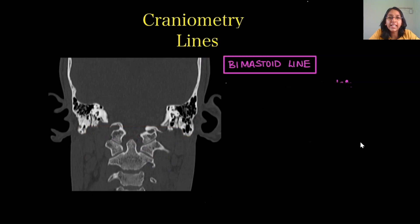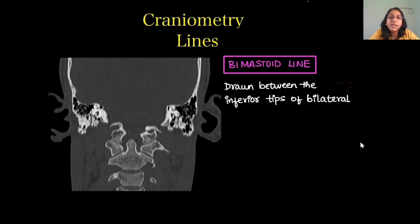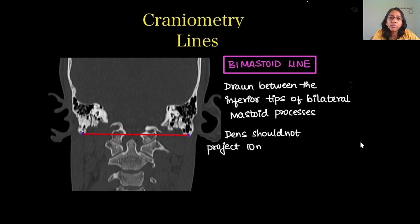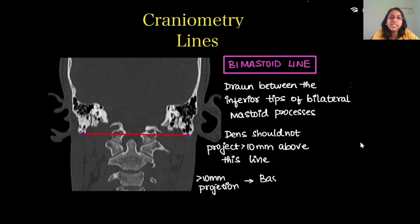Also on the coronal section, we have the bimastoid line, drawn between the inferior tips of the bilateral mastoid processes. Normally the dens should not project more than 10 mm above this line. If it projects more than 10 mm above this line, it suggests basilar invagination.